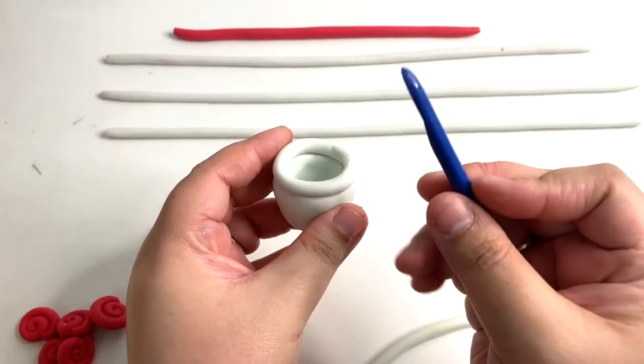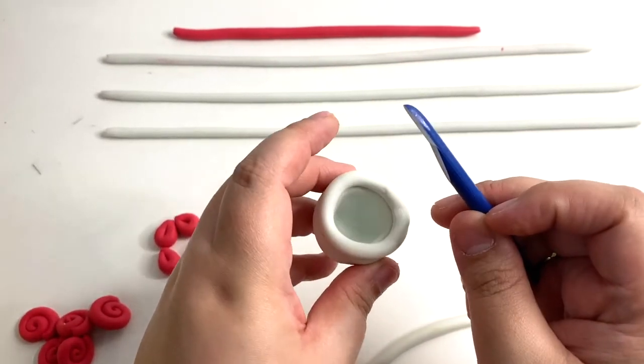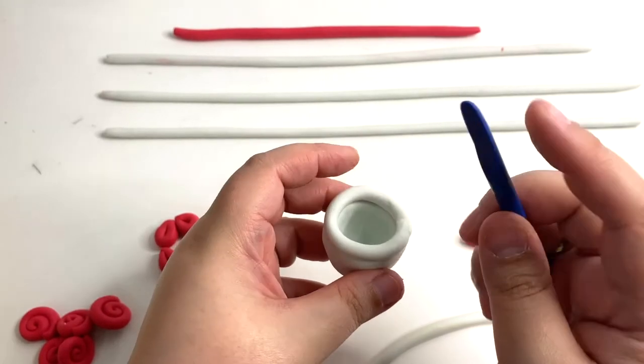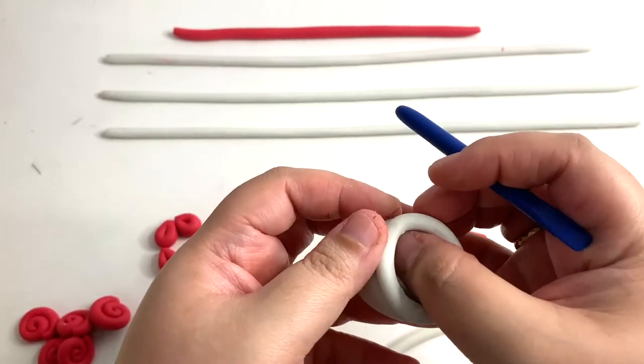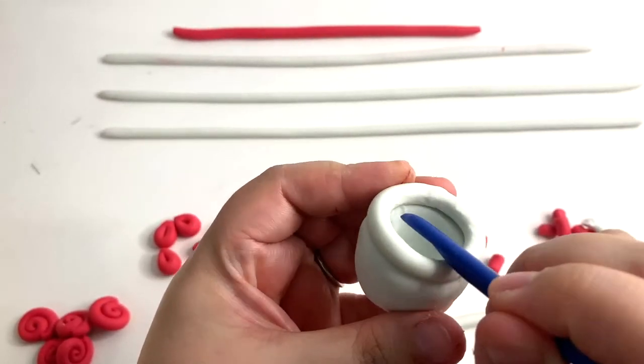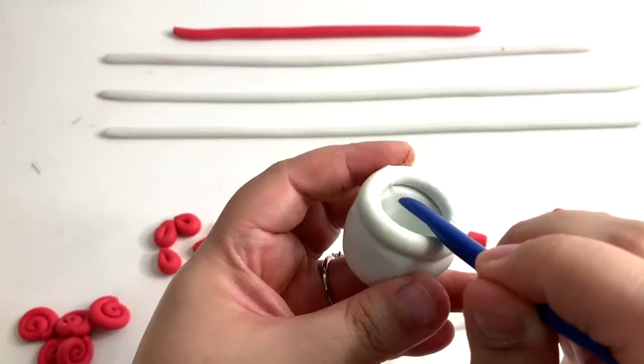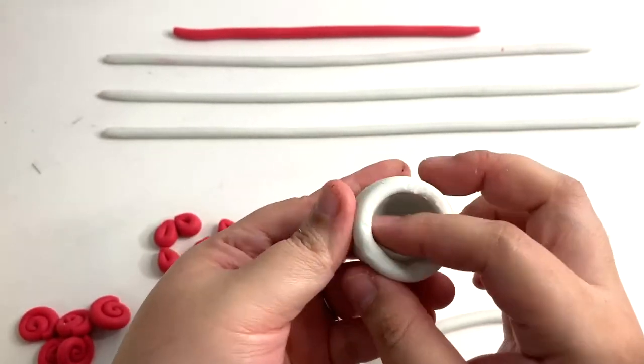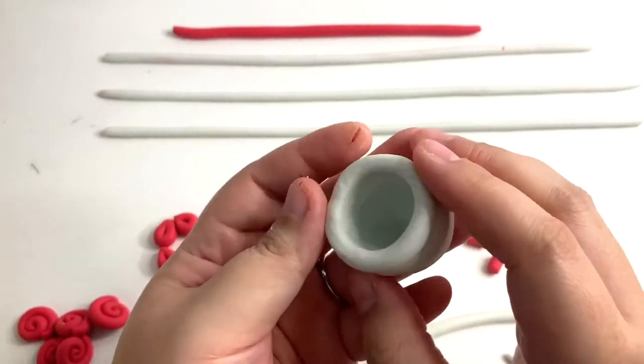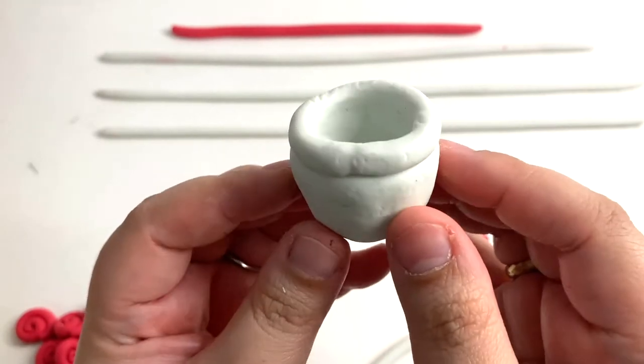Now, we are going to do the blending on the inner part by using the short blue tool. Use the end that looks like a mini spoon to blend. Use your finger to smoothen it further. Do not blend the outer part. Check the blending of the inner part is properly blended.